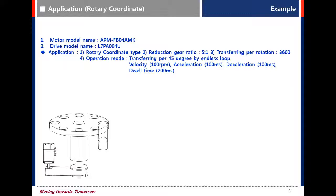Model is FB04AMK. The capacity is 400W and the encoder is a multi-turn type with 19-bit resolution. This is rotary coordinate type using reduction gear ratio 5 to 1. The distance per one rotation of final load is 3600 degrees, so motor rotates 5 times to travel 3600 degrees.